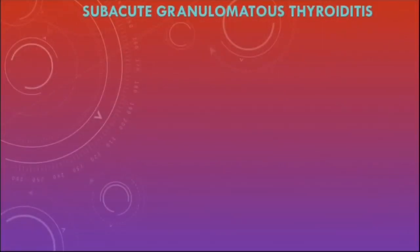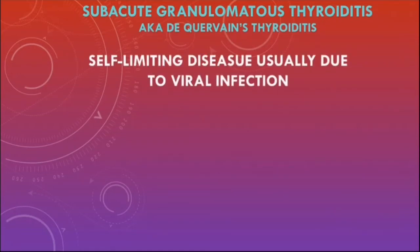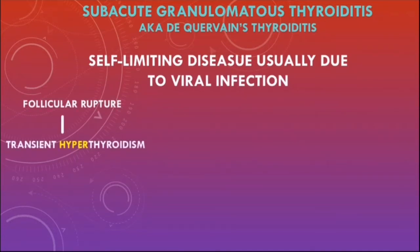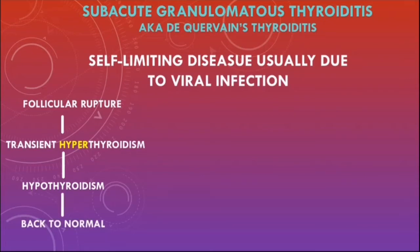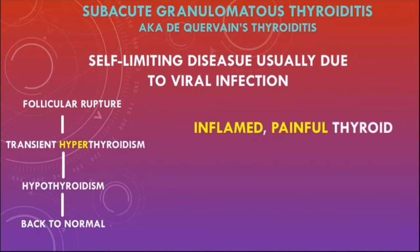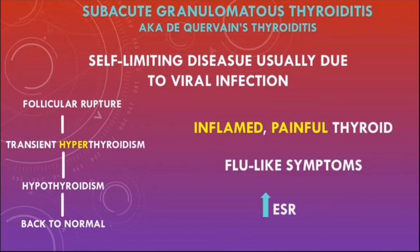Subacute granulomatous thyroiditis, also known as De Quervain's thyroiditis, is a self-limiting disease that usually occurs due to a viral infection such as a respiratory tract infection. Initial follicular rupture can cause transient hyperthyroidism followed by hypothyroidism, but most patients return to normal thyroid function. It causes an inflamed, painful thyroid gland. Patients may have flu-like symptoms and elevated ESR on labs.